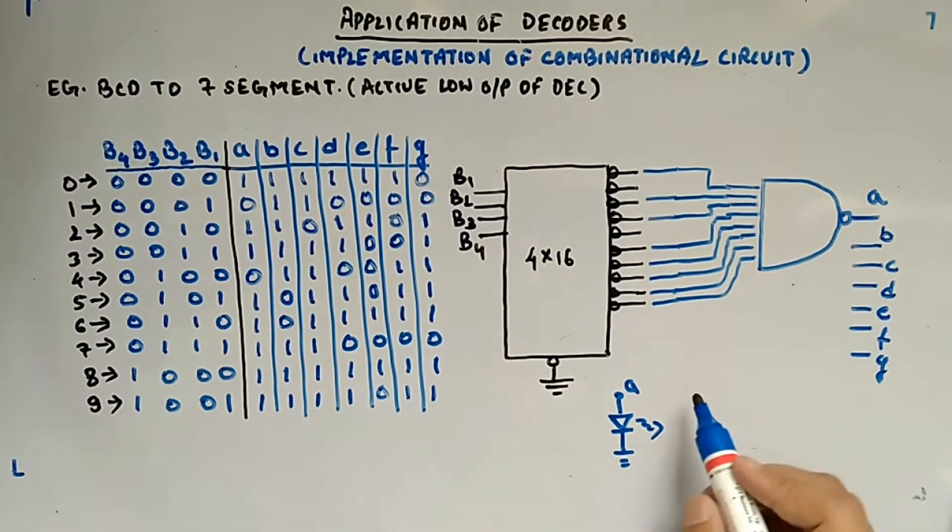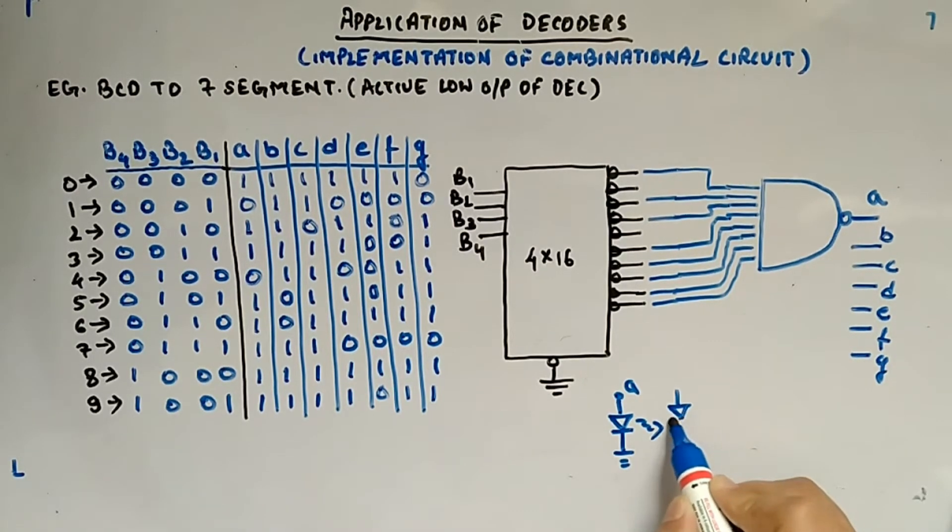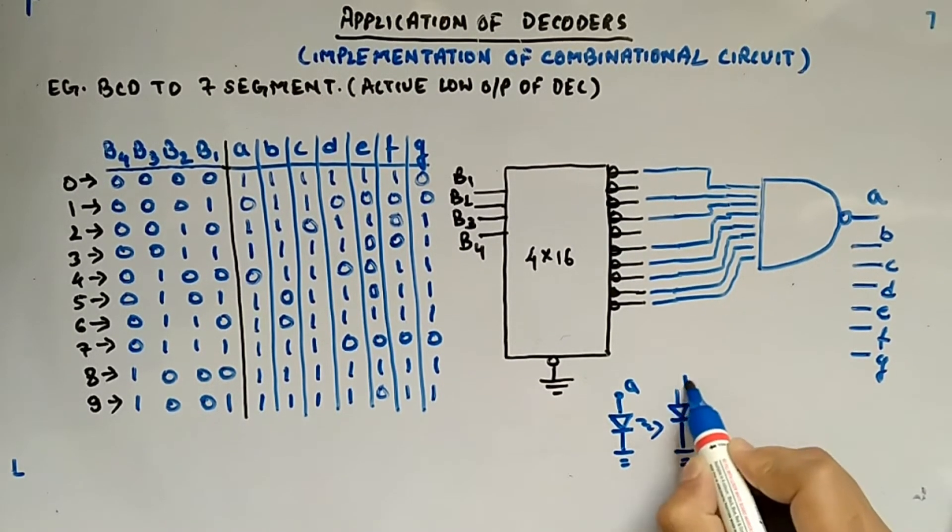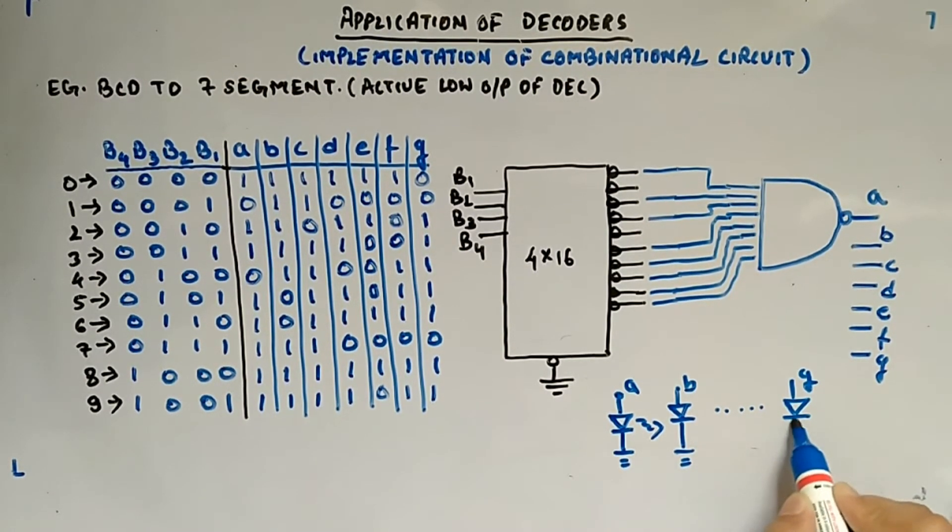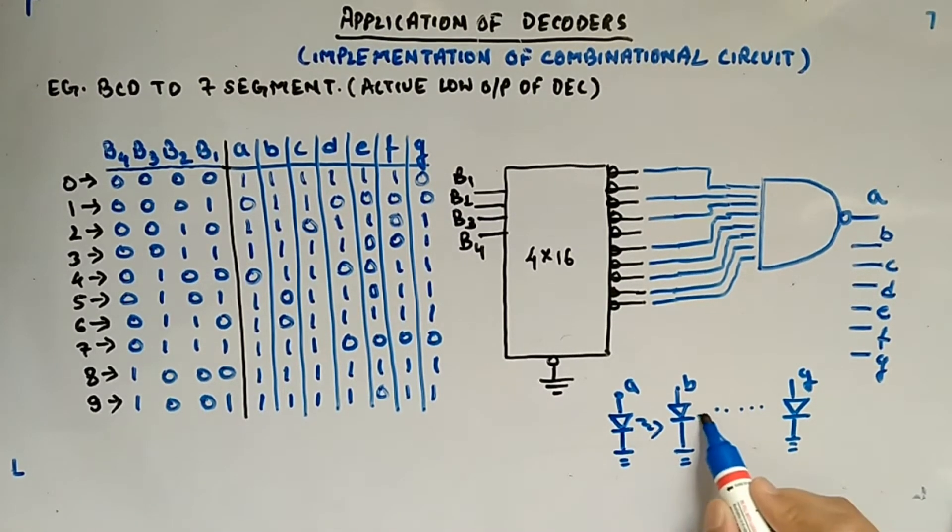So the same concept what we had before, similar thing you have with B, similar thing we have with B and likewise you will have with G, so LEDs will glow.